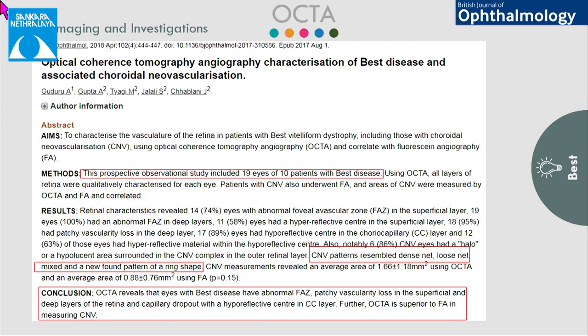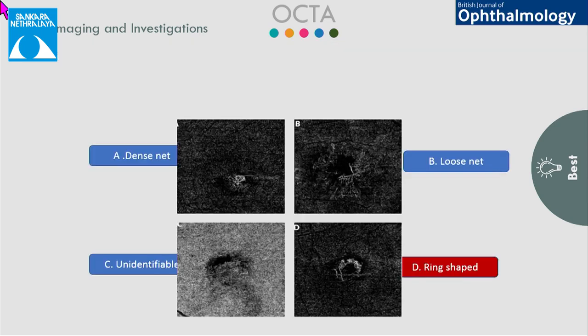An observational study on OCTA features of Best disease was done. The results showed that OCTA was superior to fluorescein angiography in measuring CNVM. They also defined a new pattern of CNVM in Best disease — a ring-shaped pattern — along with others being loose net, dense net, and an unidentifiable pattern.